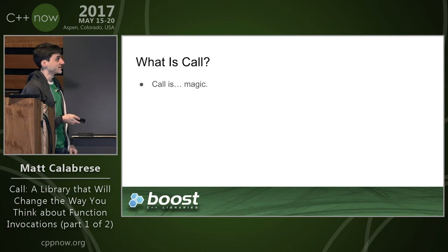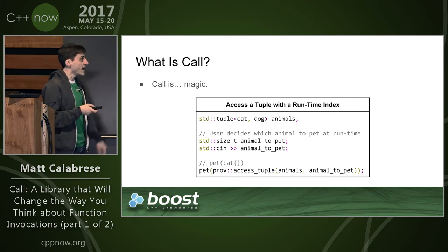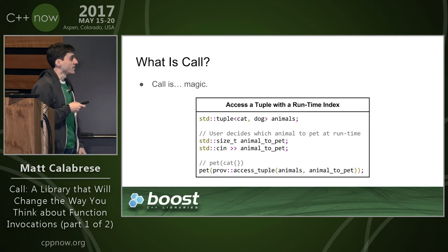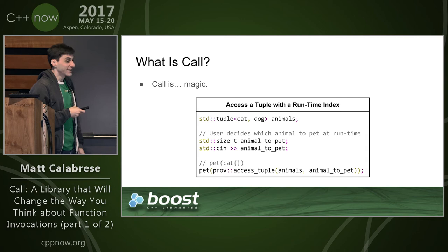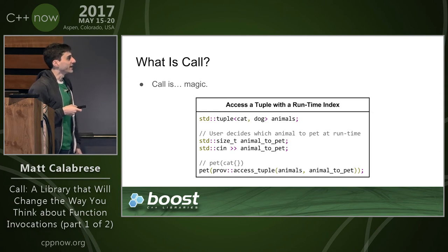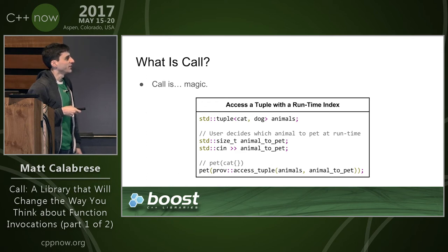Another description: call is magic — it can do things you didn't think were possible. One example is using call to access a tuple with a runtime index. You have a tuple with two elements, a cat and a dog, and at runtime the user decides which one to interact with. We read in an index at runtime, call 'pet' with 'prov::access_tuple(animals, index),' and it expands out to the corresponding element. This works the same way a variant is implemented — a switch or a lookup table of function pointers.